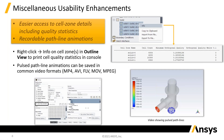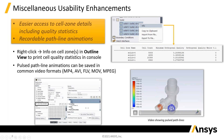A couple of ease-of-use improvements: first, if you want to find out about your mesh, you can now select a whole collection of regions, volumes, or cells and get information on the mesh quality all at once.